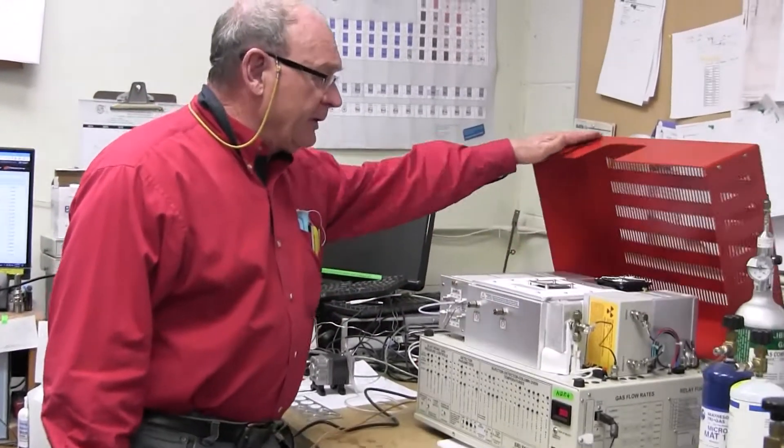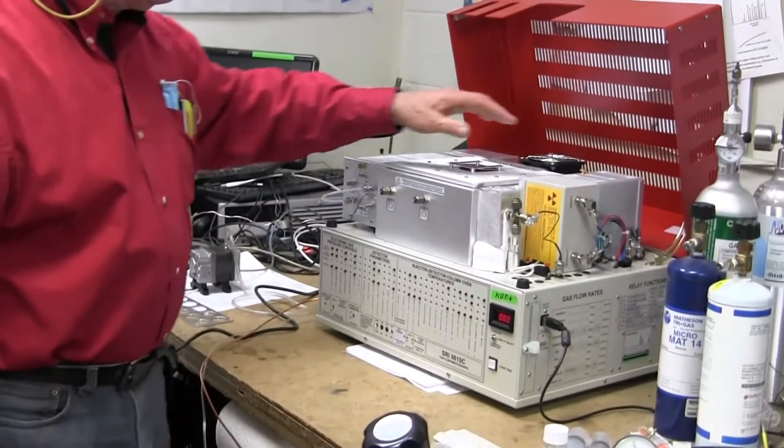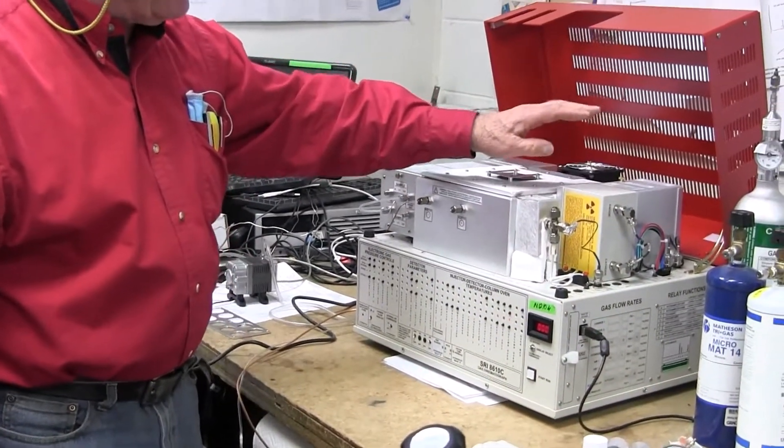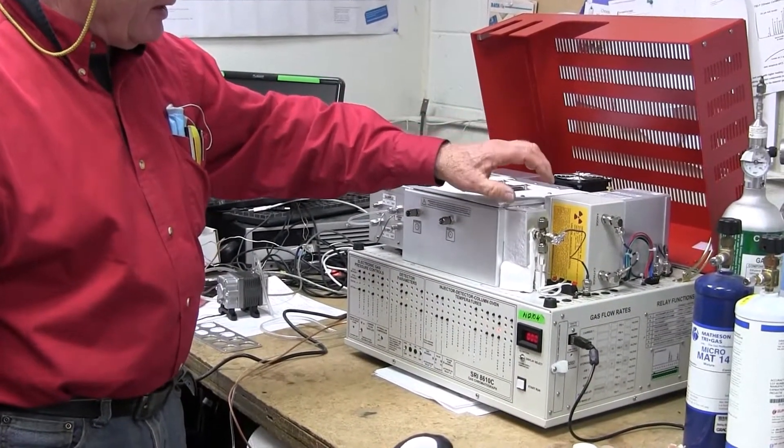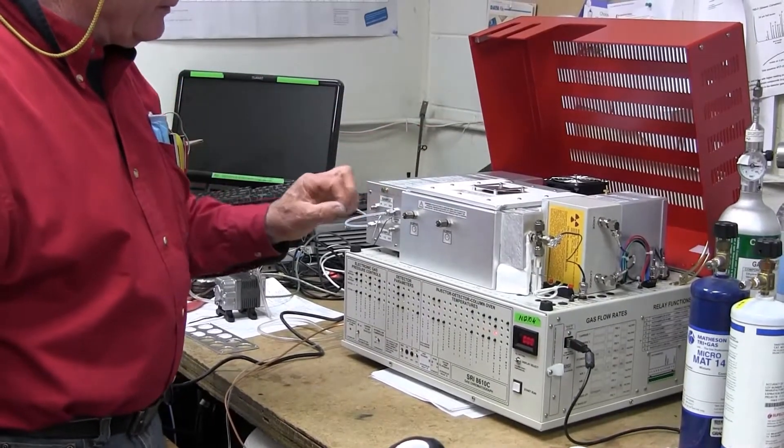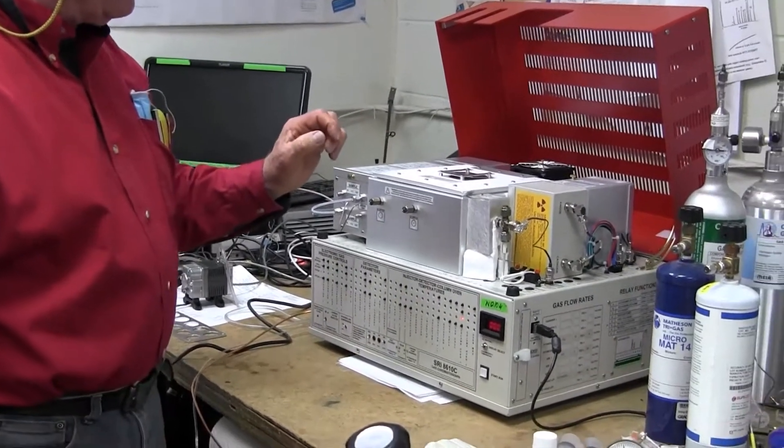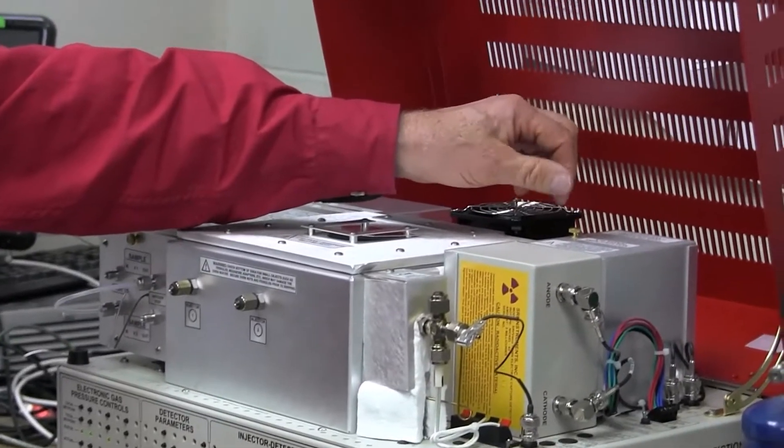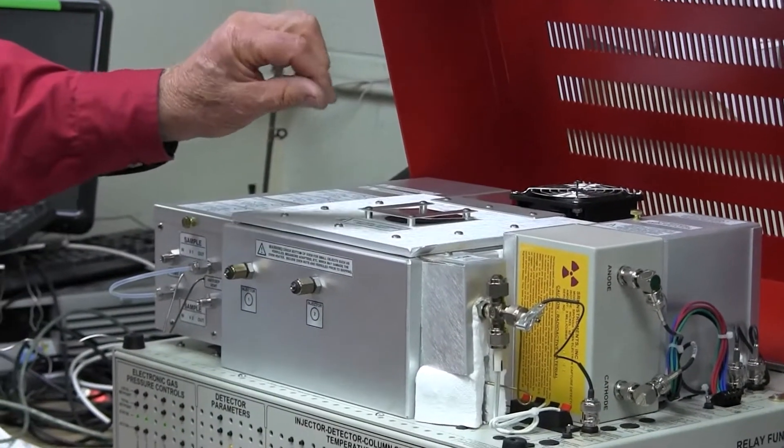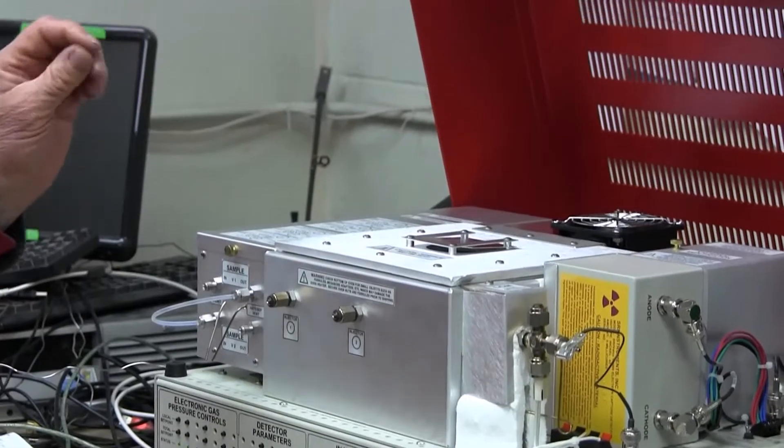This is a typical greenhouse gas GC configuration. There's an electron capture detector for detecting nitrous oxide and a FID with a methanizer for detecting methane and CO2. This particular one also has a thermal conductivity detector for detecting hydrogen, oxygen, and nitrogen at the same time.